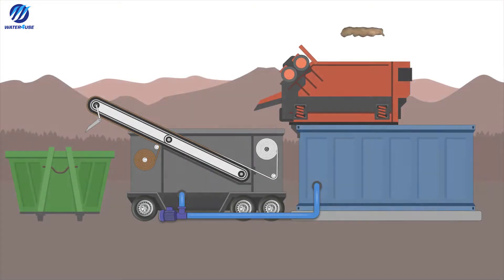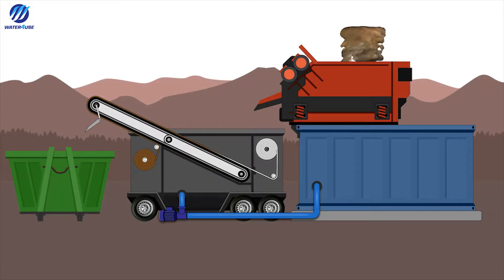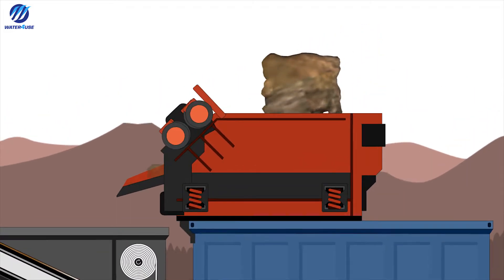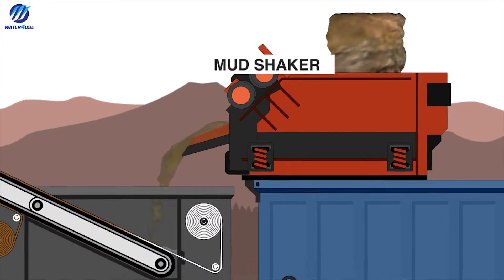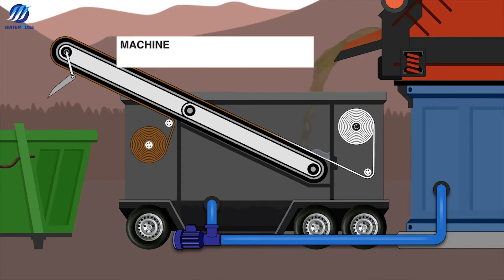It will be processed using CVFM after it's used from drilling CSG, or Coalseam gas. It will first pass through the mud shaker and later to the CVFM.